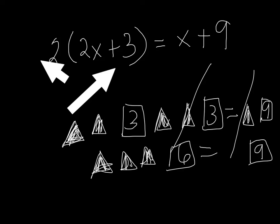So now I'm going to take six from nine. It'll leave me with three. So, three pawns is equal to three.